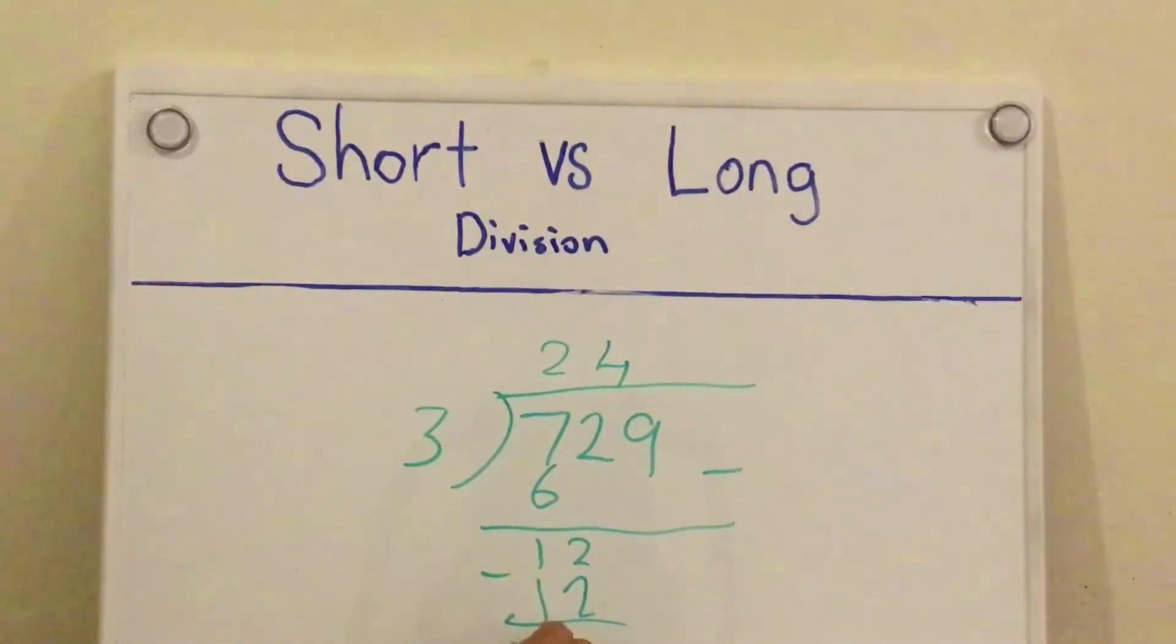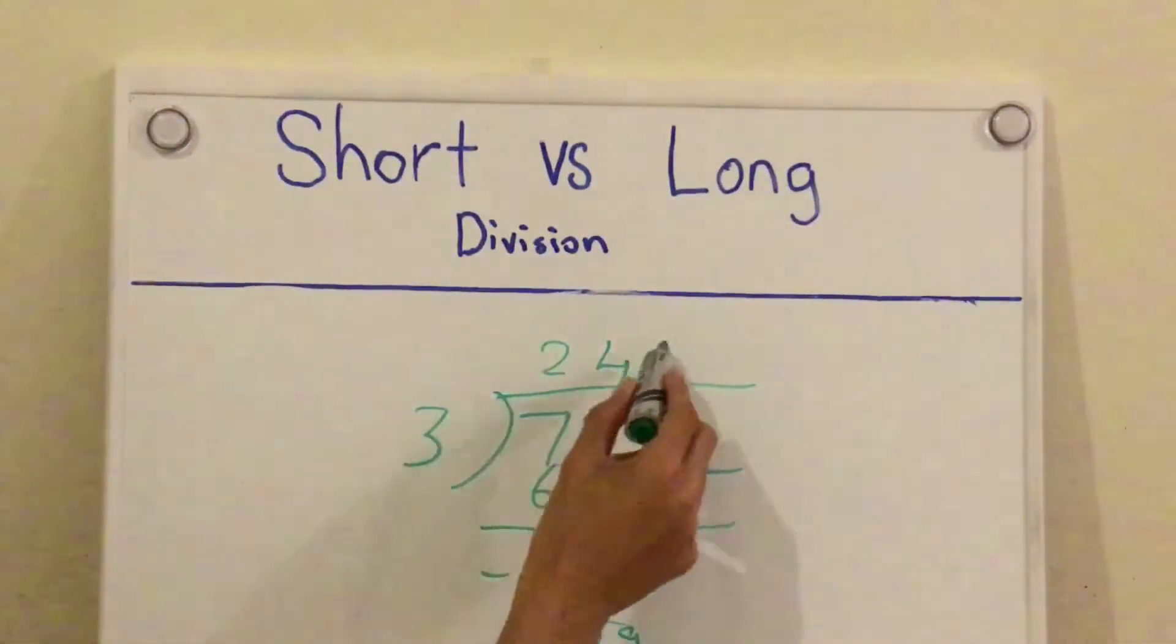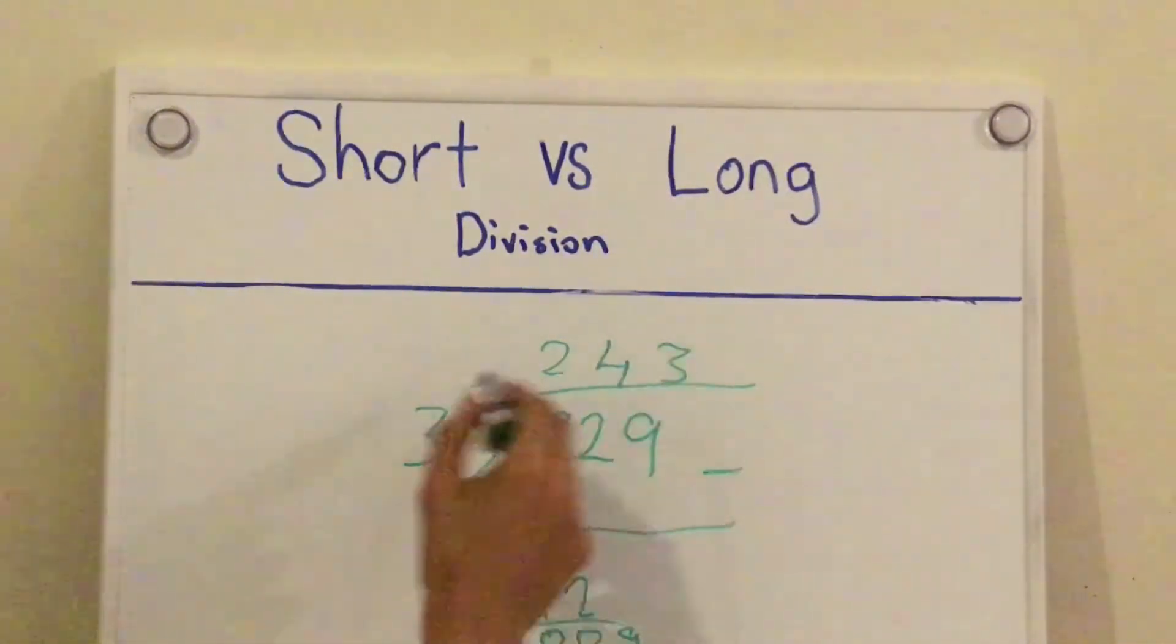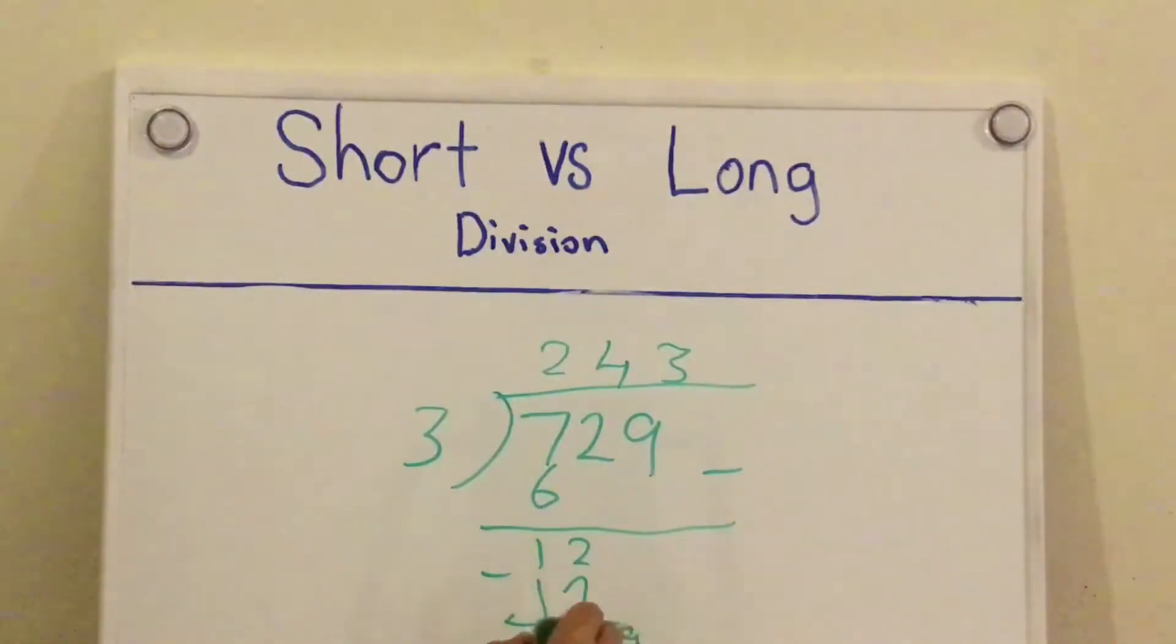So you get 0, 0. And now this is the point where you bring down the 9. So we're going to bring down the 9 because we can't go 0 divided by 3. And now we can go 9 divided by 3, which you get 3. And then 3 times 3 is 9. And now subtract, you should get 0, 0, 0 at the bottom. And your result at the top should be 243.